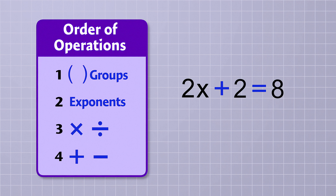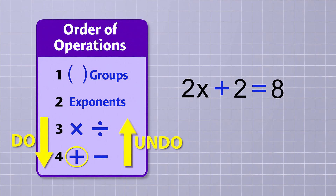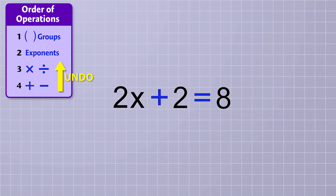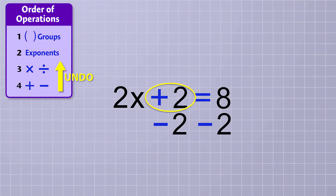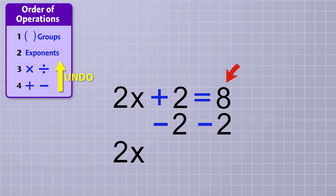Since the order of operations rules tell us to do multiplication before addition, we should undo addition before we undo multiplication. So first, we undo the addition by subtracting 2 from both sides of the equation. On the first side, the plus 2 and the minus 2 cancel each other out, leaving just 2x. And on the other side, we have 8 minus 2, which is 6.